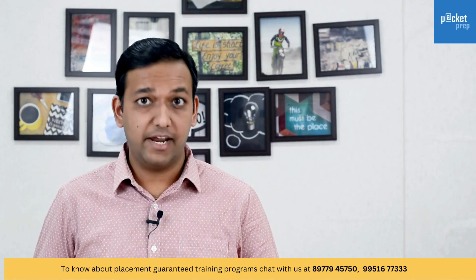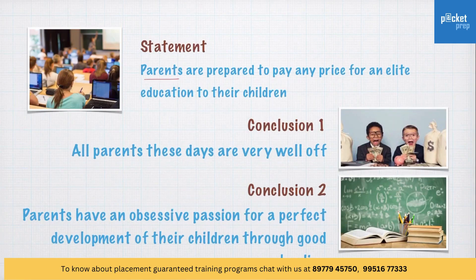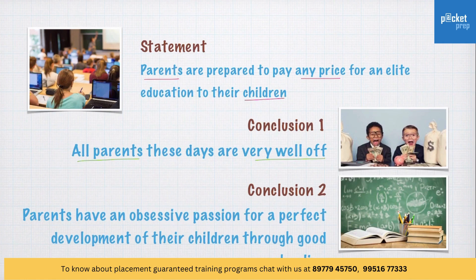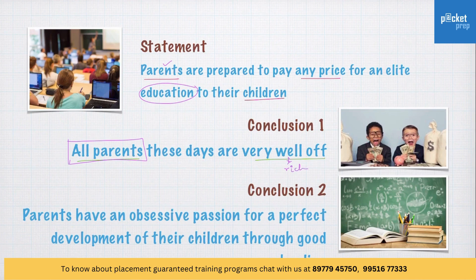Let's try a question. Statement: 'Parents are prepared to pay any price for an elite education for their children.' Conclusion 1: All parents these days are well off. Can this conclusion follow the statement? The statement says parents are willing to invest in education, but that does not mean every parent is well off — there could be some parents who may not be rich. Therefore, this conclusion is not valid.